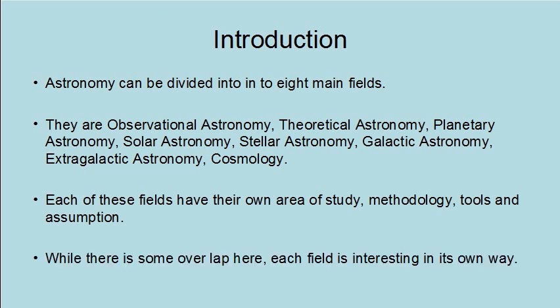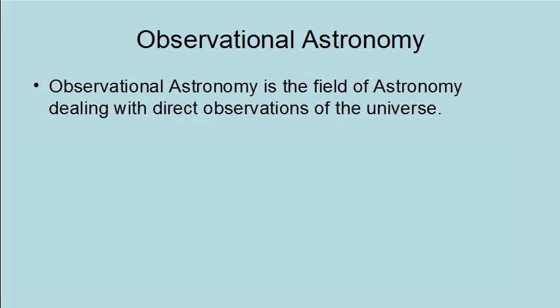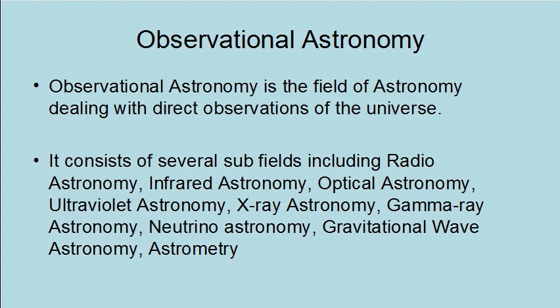While there is some overlap, each field is interesting in its own way. Observational astronomy is the field of astronomy dealing with direct observations of the universe. It consists of several subfields including radio astronomy, infrared astronomy, optical astronomy, ultraviolet astronomy, x-ray astronomy, gamma ray astronomy, neutrino astronomy, gravitational wave astronomy, and astrometry.